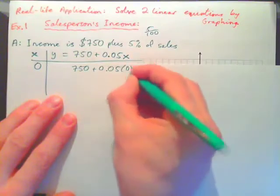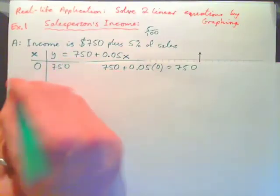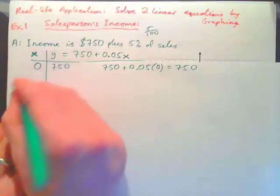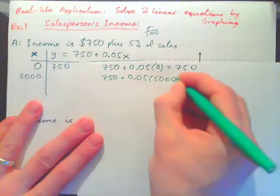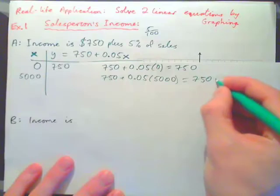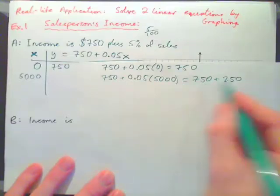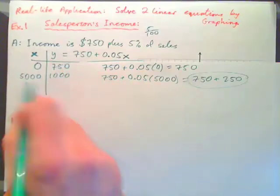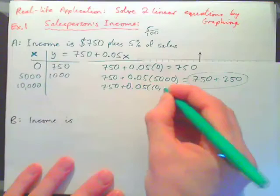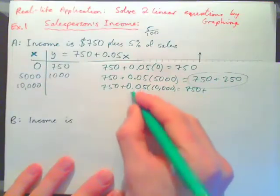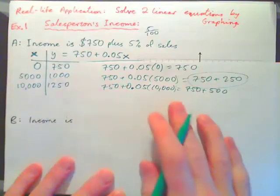So if our sales were zero, the income would be 750 plus 0.05 times 0, which would just be $750, right? If the sales was say $5,000, income would be 750 plus 0.05 times 5,000, which is 750 plus $250, right? And this makes $1,000. If your sales were $10,000, income will be 750 plus 0.05 times 10,000, which is 750 plus 5% of 10,000. That times that is actually $500, so the income would be $1,250 and so on.